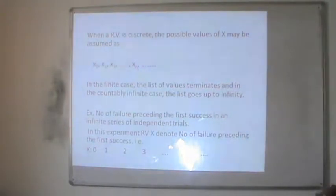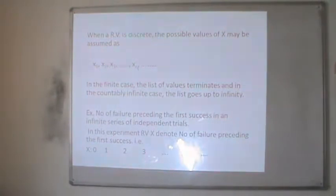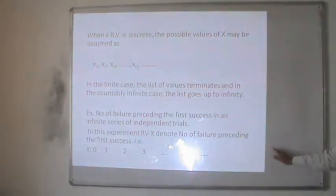So if a random variable is discrete, then that random variable assumes either a countably finite number or countably infinite number of values.